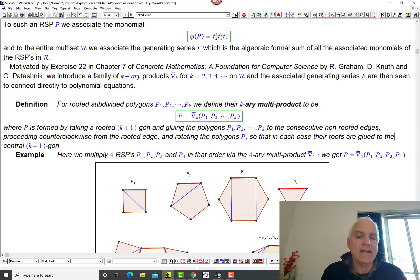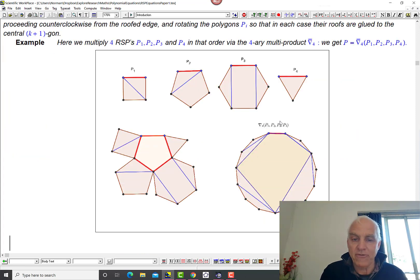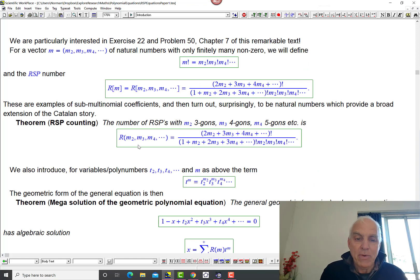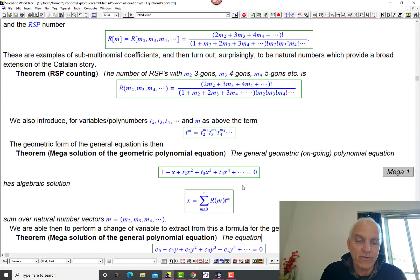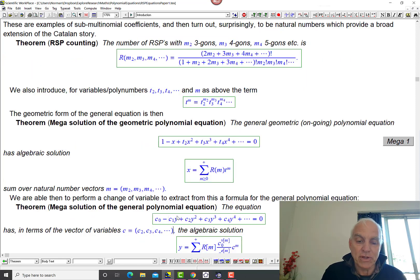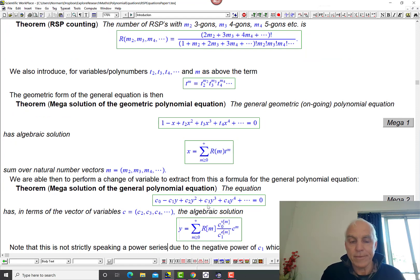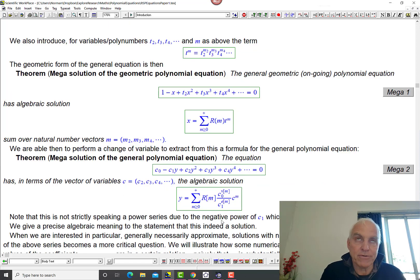So there's a self-contained aspect, although it's actually quite concise. So we're introducing various things: RSPs, these K-ary multiproducts. We have some diagrams to illustrate those. We have this important theorem that the number of RSPs with given number of 3-gons, 4-gons, and 5-gons is given by our RSP number. We have connection with algebraic equations, and then we have our basic two mega formulas: the mega solution of the geometric polynomial equation, which is of this form here, and there's the general solution in terms of these RSP numbers and these certain monomials. And then the mega solution to the general polynomial equation, which is a change of variables from this one. So those are the main theoretical results.